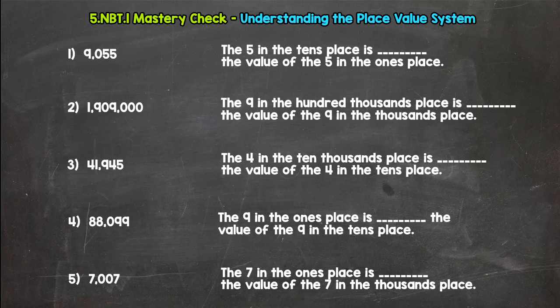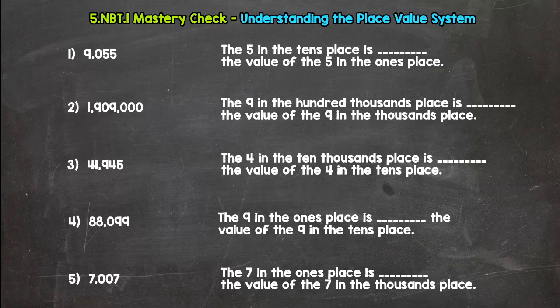Alright, so you should have a pencil and something to write with. We are going to do five questions. As you can see on the left we have five numbers and then we have some fill-in-the-blanks to the right. For our mastery checks, I'll tell you to press pause in a second. You press pause, do numbers one through five, and then check your answers with mine.